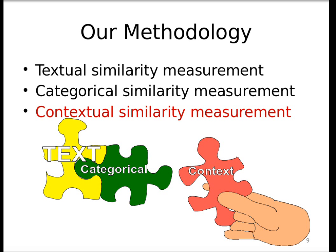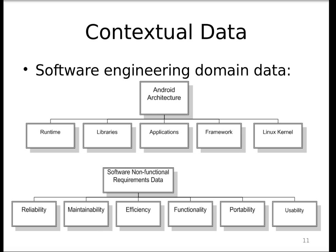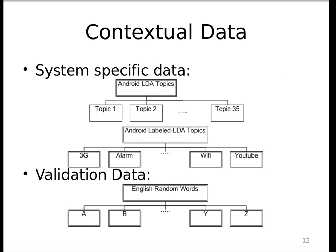Our methodology focuses on extending textual and categorical similarity by adding contextual similarity — the domain knowledge of software engineering. Instead of using off-the-shelf components like BM25F for text similarity, we leverage software engineering knowledge to help deduplicate bugs. The context could be architecture-related words like the Android architecture, software quality concepts like non-functional requirements — maintainability, portability, usability, efficiency — or system-specific data automatically extracted by LDA or semi-automatically by labeled LDA.